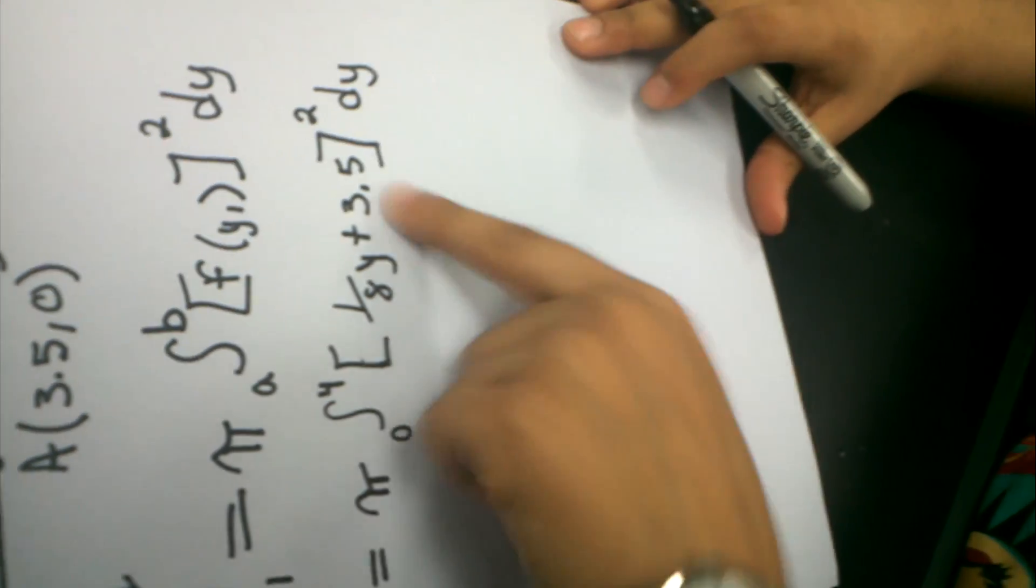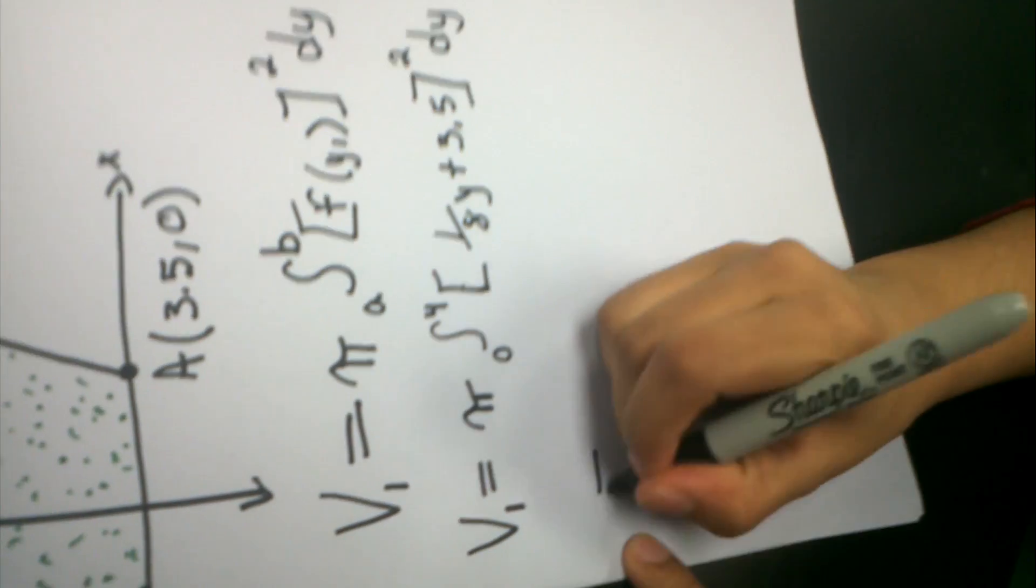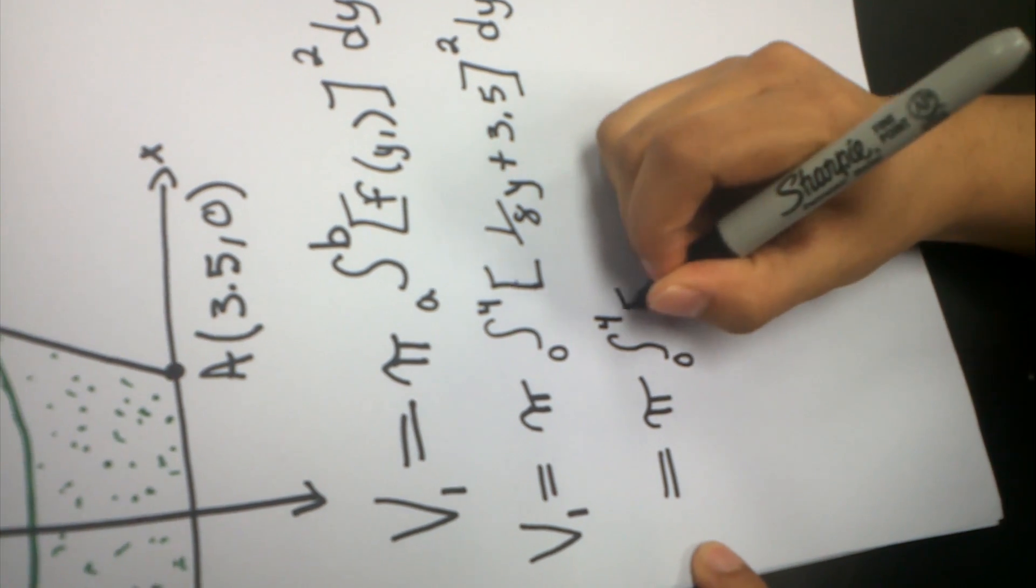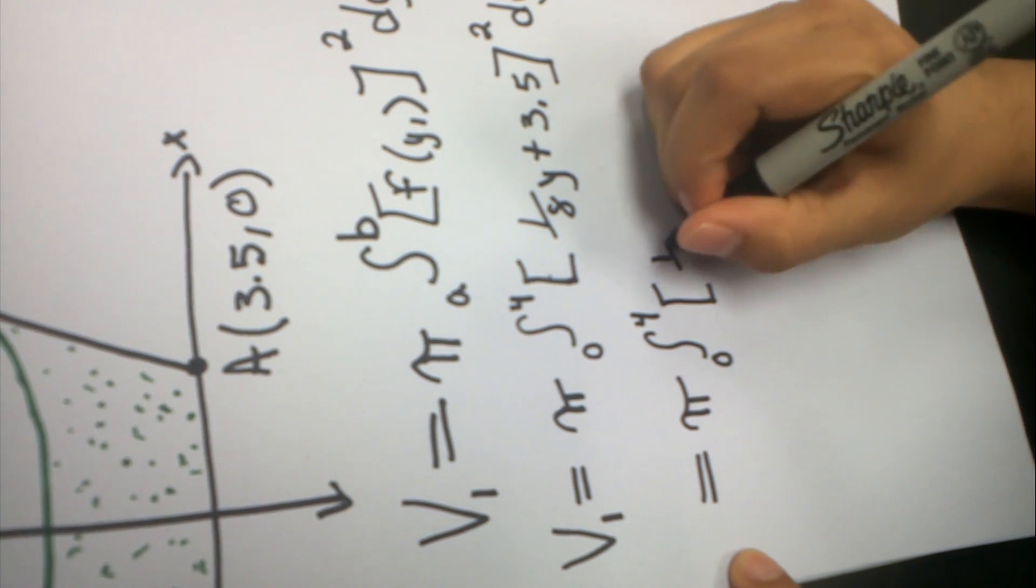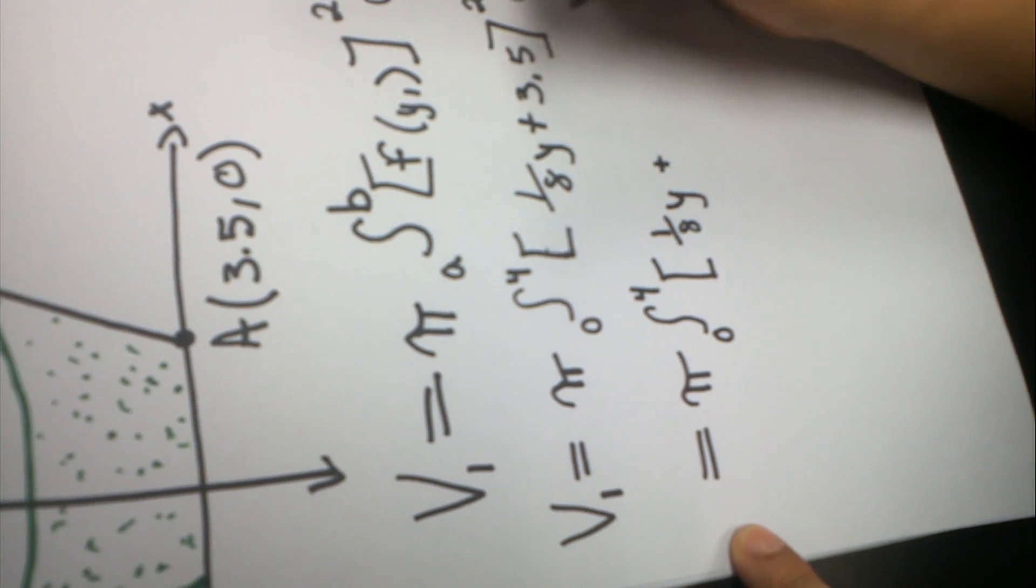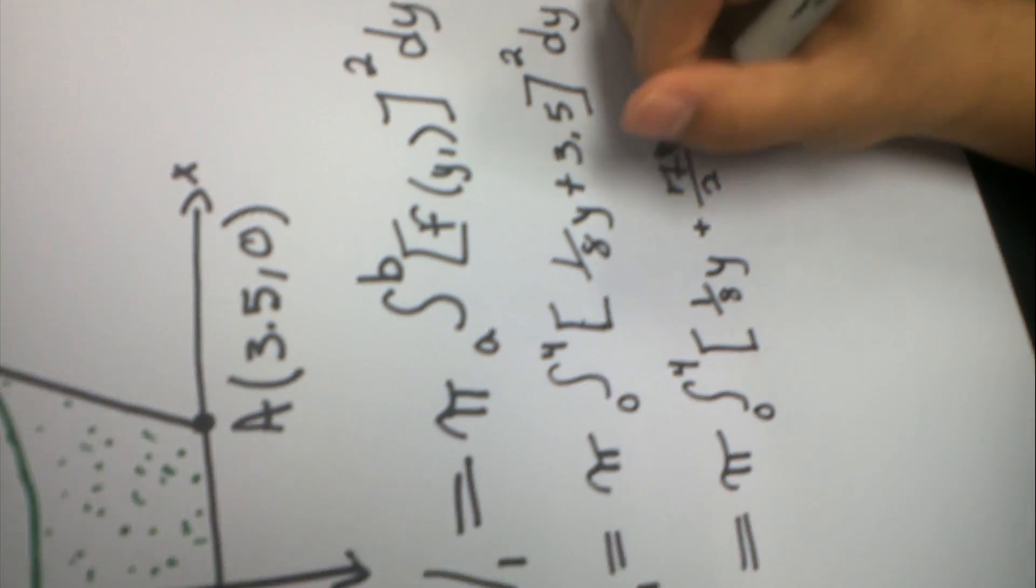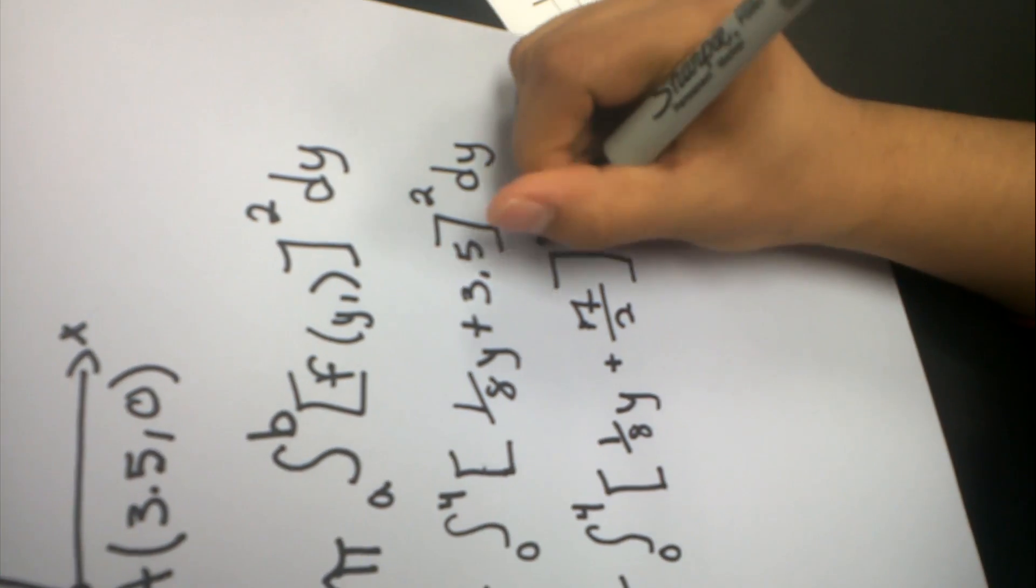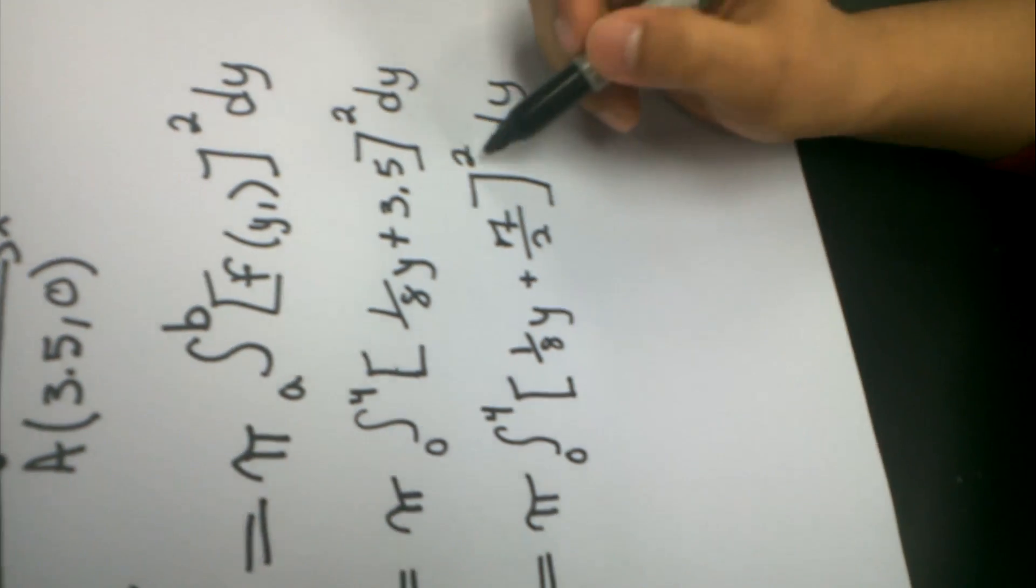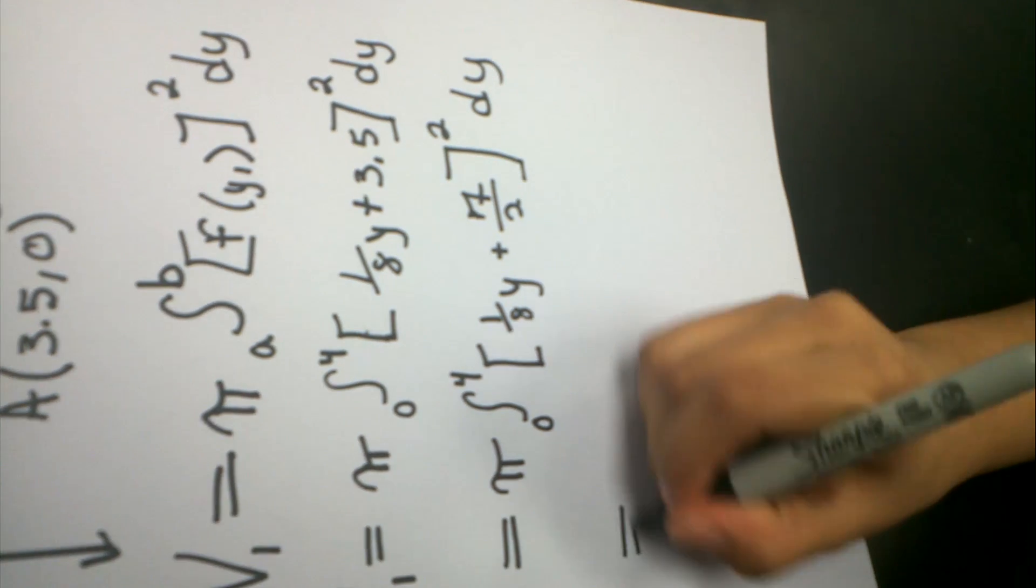Now I'm going to change this 3.5 into a fraction, so that makes everything easier. So you go to π, 0 to 4, (⅛y + 3.5), which is 7/2. Remember, this is all square, dy. So now I'm going to plug in this square, and I'm going to square the whole equation. I'm expanding it.